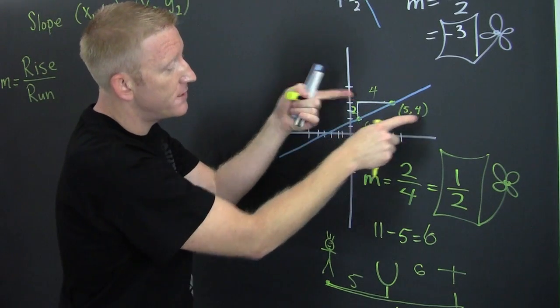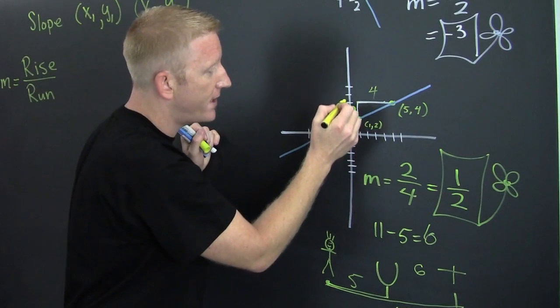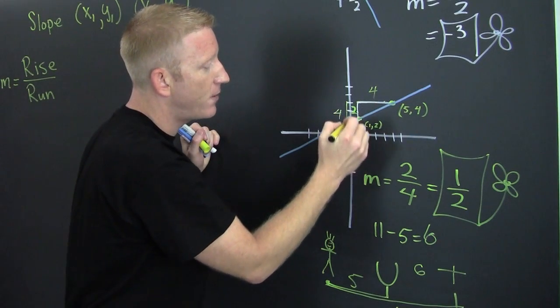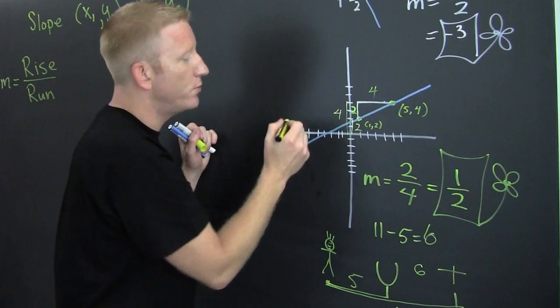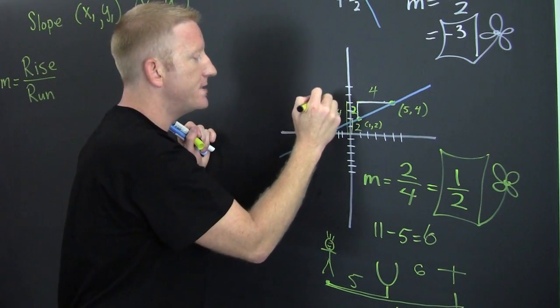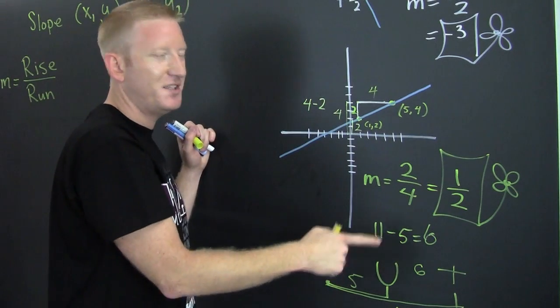We're gonna take the two y values and we're gonna subtract them. Here, this y value be 4, that y value be 2. So what do we do? We go through and we say 4 minus 2, just like me, you, and them did down there.